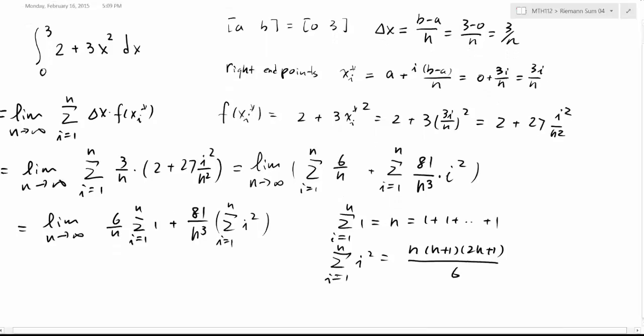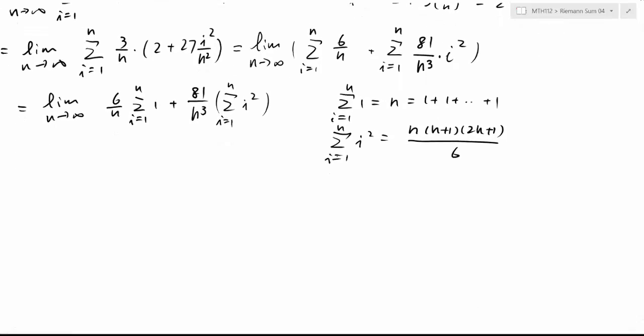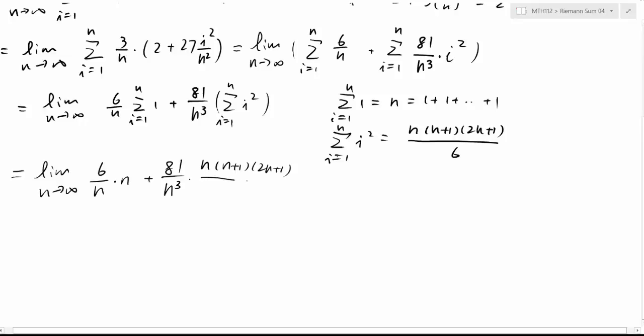So now we put these formulas inside. This equals the limit as n approaches infinity: 6 over n times n, plus 81 over n cubed multiplied by n times (n plus 1) times (2n plus 1) over 6. Now we can do some cancellation. N and n is canceled, and this n over here now becomes 2.